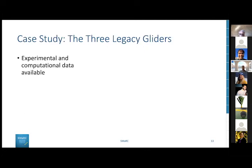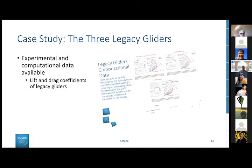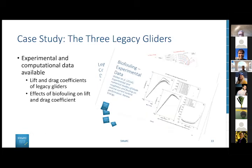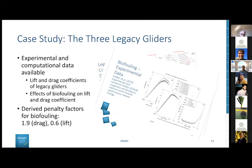That is what we've done in the study. We looked at the three legacy gliders and there is a lot of experimental and computational data available online published by different authors. We have data on how biofouling affects lift and drag coefficients. From these data sets, in a simple case we have used penalty factors to penalize the drag coefficient when we have biofouling and lift coefficient when we have biofouling, simply by increasing the drag and by reducing the lift coefficients.